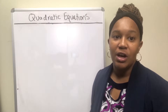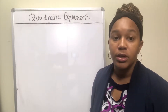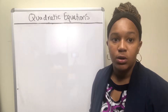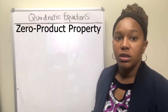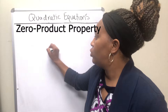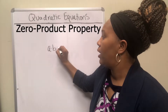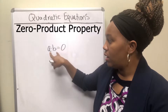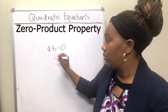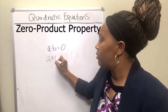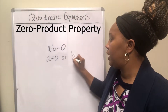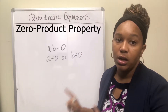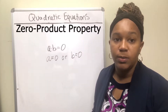We're going to look at how to solve quadratic equations by factoring. In order to solve a quadratic equation by factoring, we first have to know the zero product property. The zero product property says if you have two things that multiply to give you zero — so if a times b is zero — then we know that one of these has to be zero. So either a is zero or b is zero. We're going to use this property when solving quadratic equations by factoring.